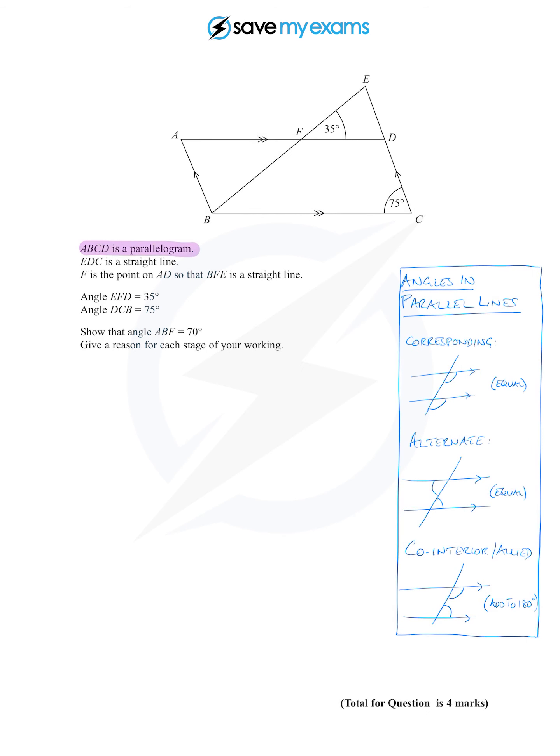We have a parallelogram ABCD, and then we've got some lines drawn across it. We've got BFE which is a straight line and EDC which is a straight line. Here are some angles, so we're dealing with angles, we're dealing with parallel lines. Before we do the question, let's just have a look at the rules we could use.